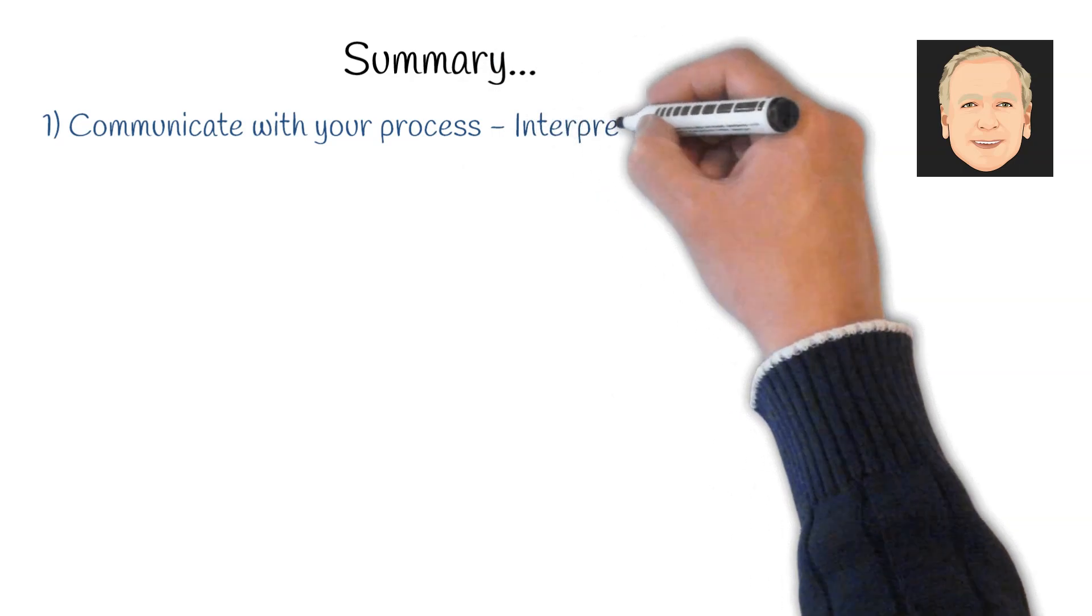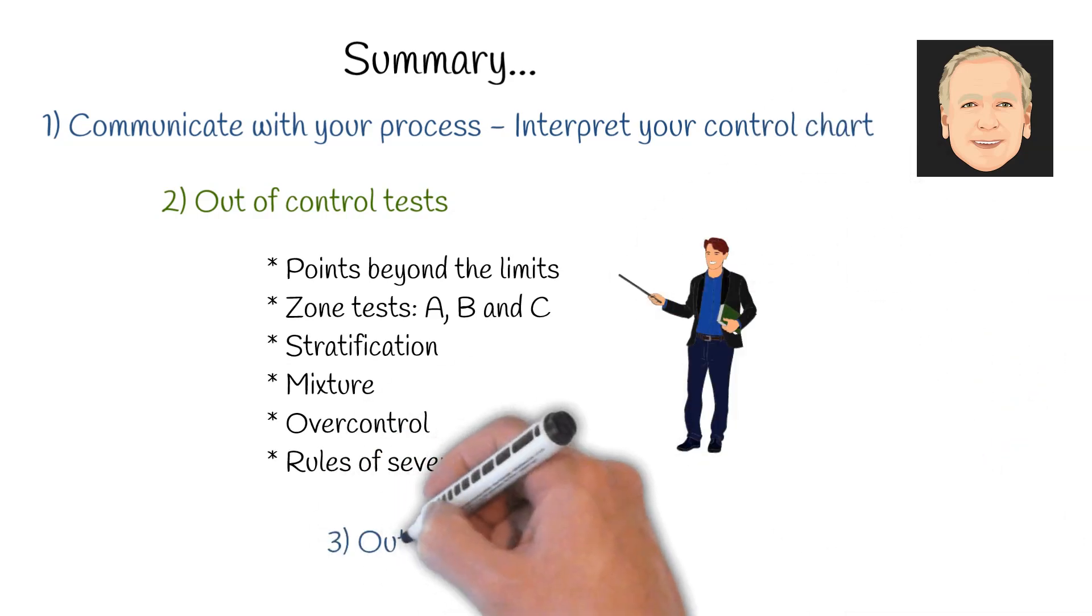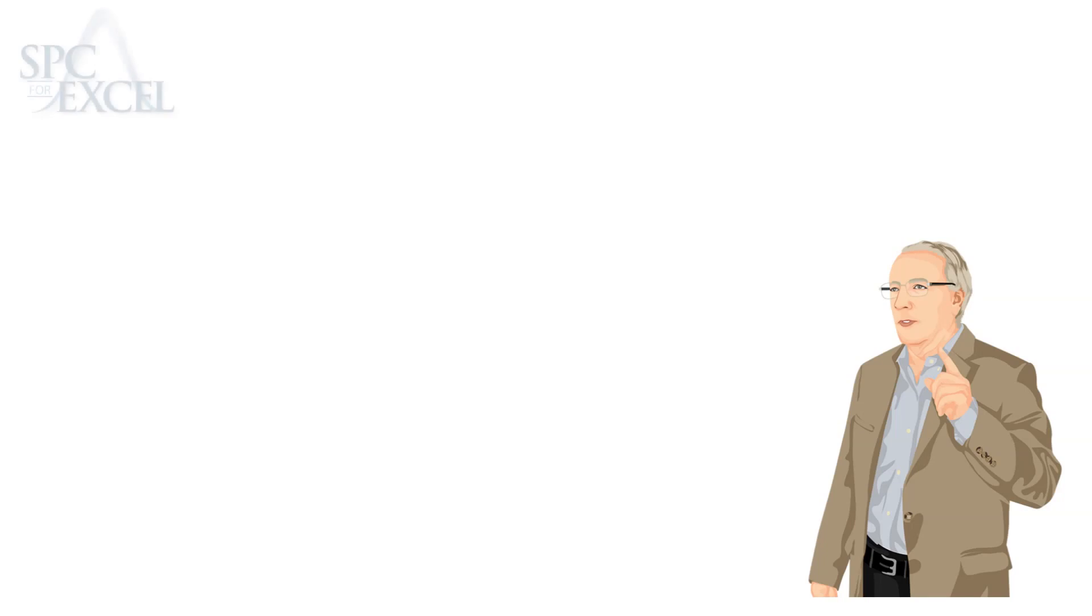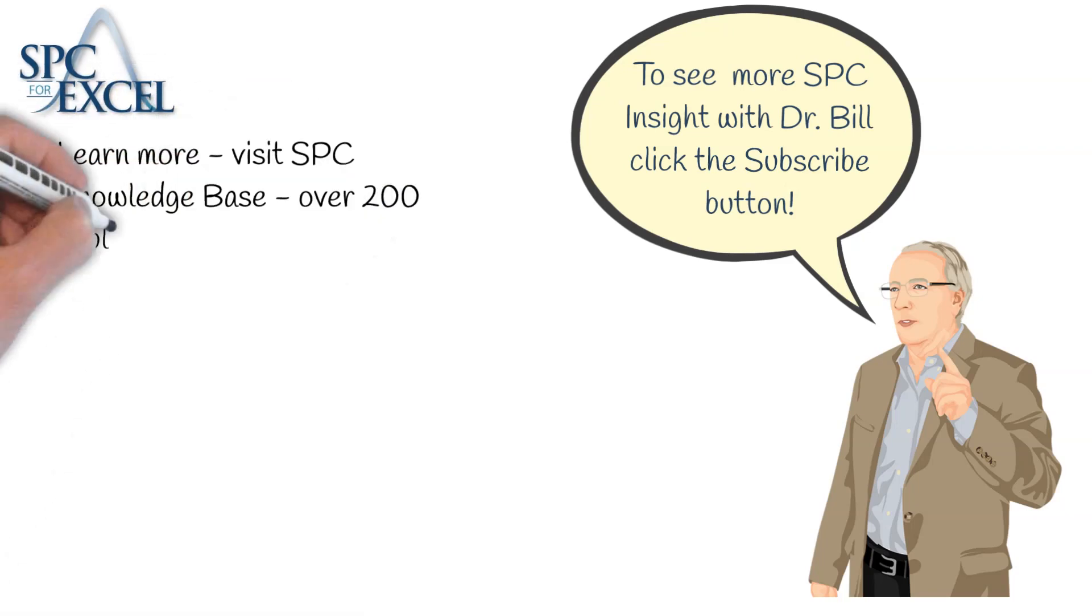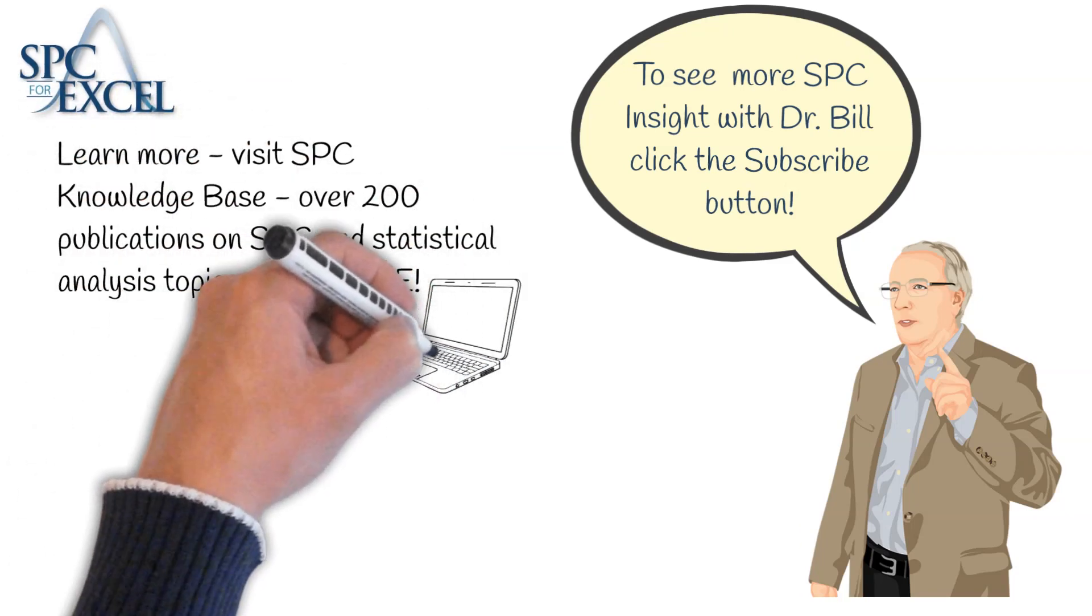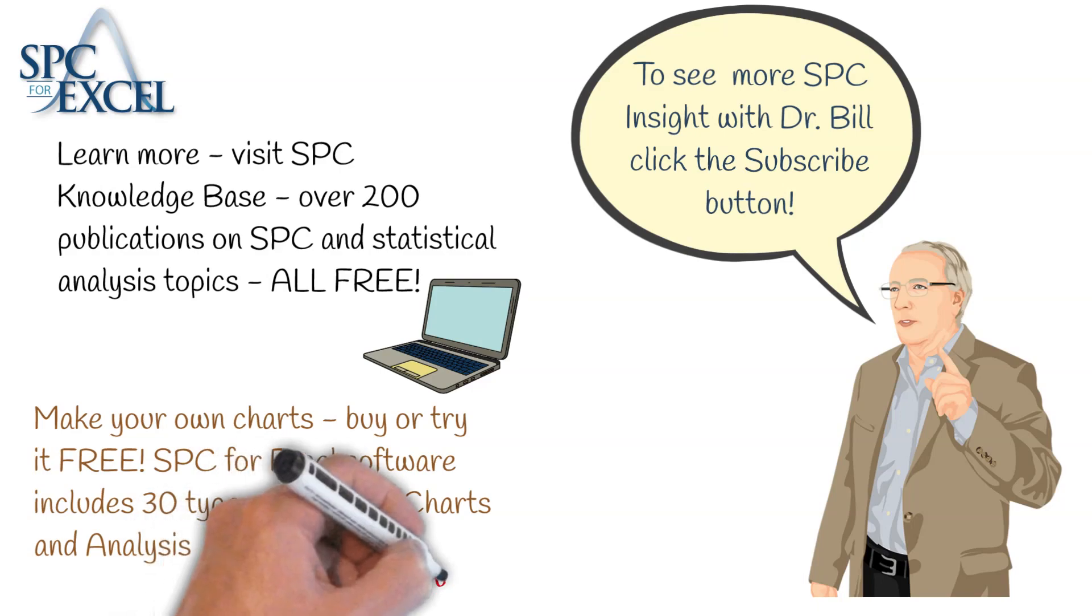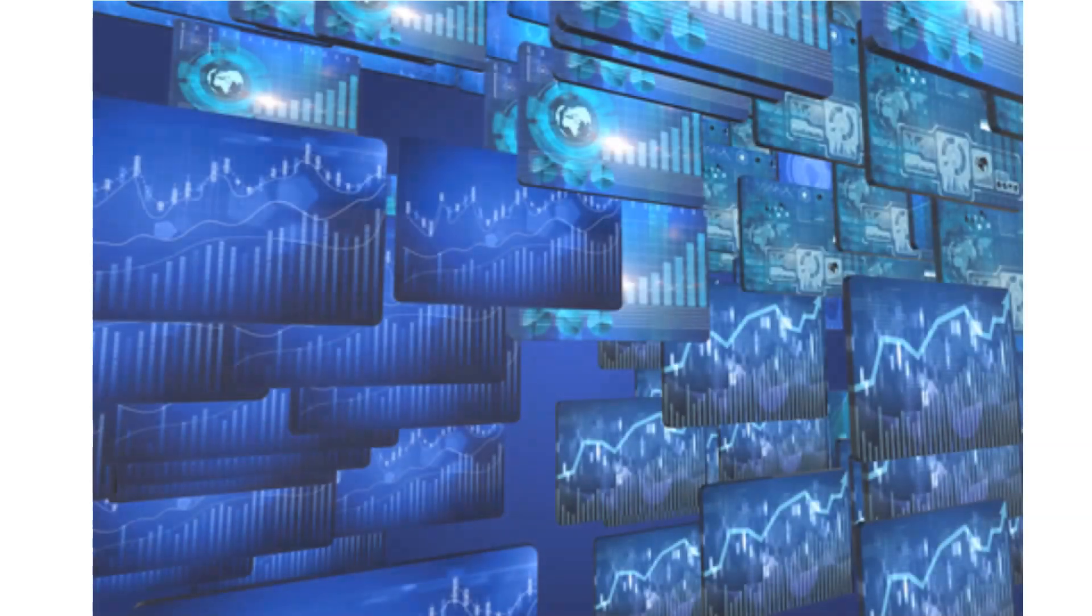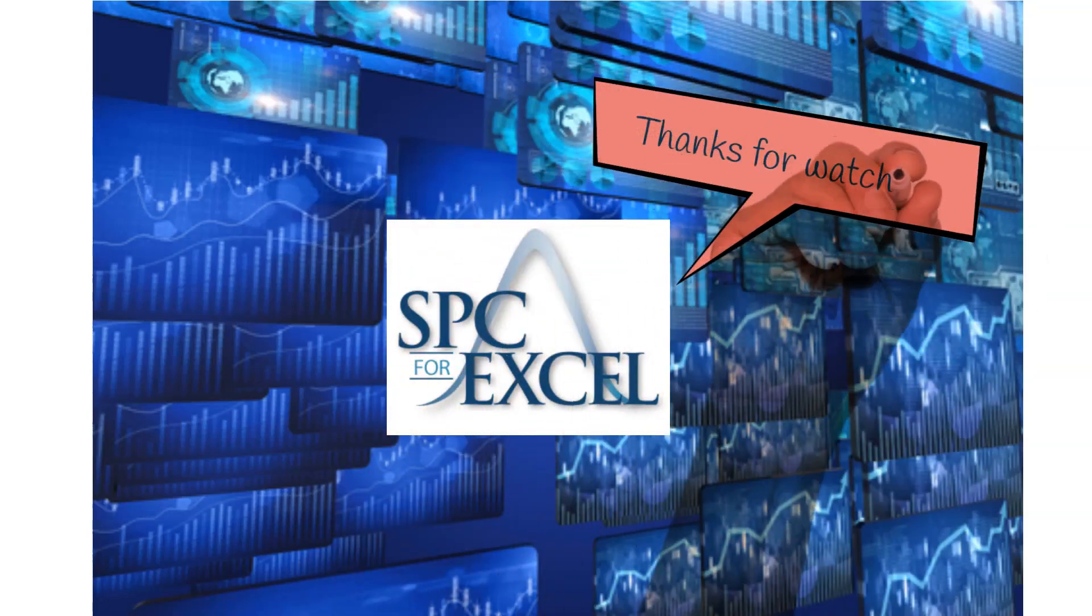Here's a summary. Control charts are the way the process communicates with you, and you have to interpret your control chart to do that. We covered the out of control tests. If you're out of control, you need to find out why. Something's wrong in your process. Thanks for watching the video.